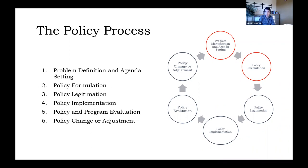The policy process really starts with problem definition and agenda setting. This is the stage at which policy makers recognize a problem that exists in the world and decide that it's time to at least talk about it. Once they talk about it, they enter the policy formulation stage, where they start coming up with policy solutions for that problem.